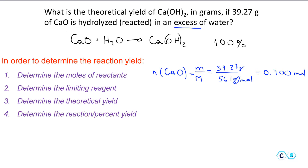Based on the reaction, we can determine how much calcium hydroxide will be produced from 0.700 moles of calcium oxide. Remember that the coefficients are both 1 — every one mole of calcium oxide produces one mole of calcium hydroxide. This means that 0.700 moles of calcium oxide will produce 0.700 moles of calcium hydroxide.